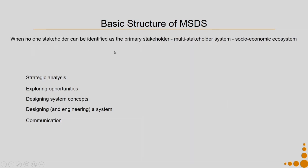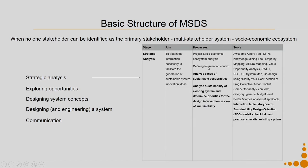Now, strategic analysis when no one stakeholder can be identified as the primary stakeholder — the multi-stakeholder system or socio-economic ecosystem. In this context, strategic analysis again aims to obtain information necessary to facilitate the generation of sustainable system innovation ideas. The analysis of sustainable best practices and sustainability of the existing system processes remain the same, but the difference is that no one main stakeholder exists and the whole economic activity happens in a very distributed manner.